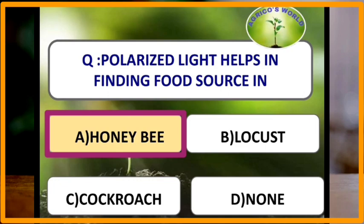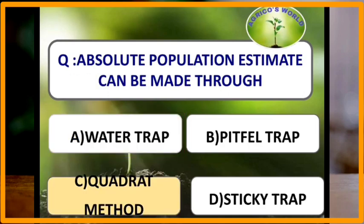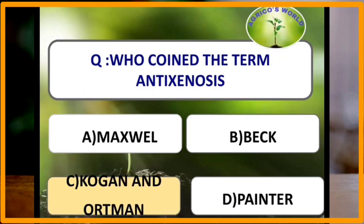Absolute population estimates can be made through the quadrat method. The term anti-xenosis was coined by Kogan and Ortman. Anti-xenosis is the mechanism employed by the host plant to deter or reduce colonisation by insects. It is due to morphological characteristics (physical factors) or allelochemicals (chemical factors) in host plants. Anti-xenosis is also called non-preference, a word given by Painter.